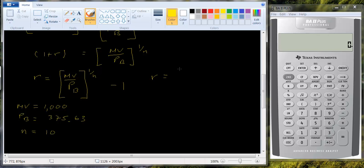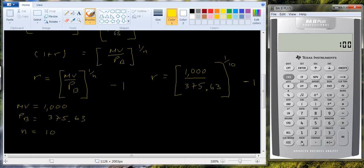It's going to be, using this formula, $1,000 divided by $375.63 to the 1 over 10 power minus 1. So let's see what we get. $1,000 divided by $375.63 and then we want to raise it to the 0.1 power and then just subtract one. And so we get 0.10286 so I'll just round off to 10.29 percent.